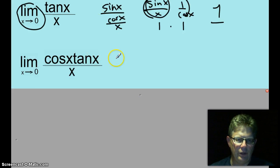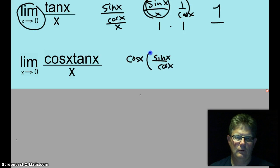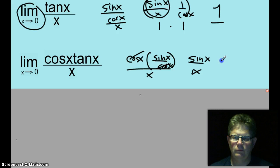The next limit we have. We're going to write cosine of x times sine x over cosine x all over x. Cosines cancel. Sin of x over x. That limit equals one.